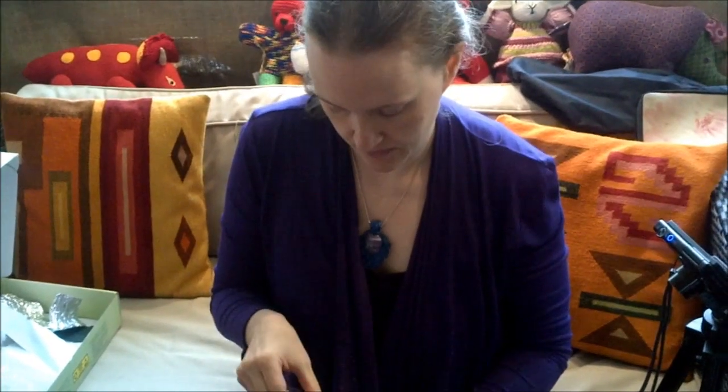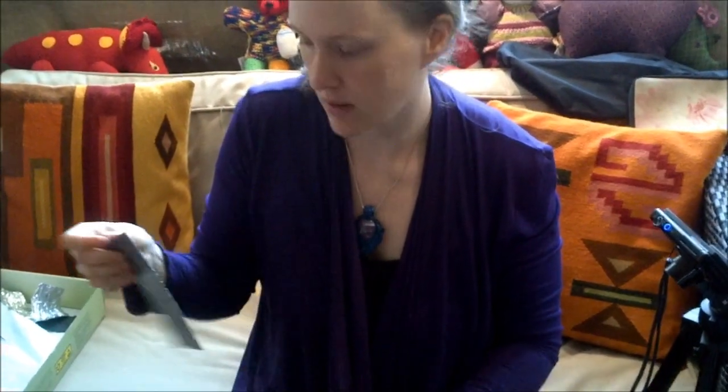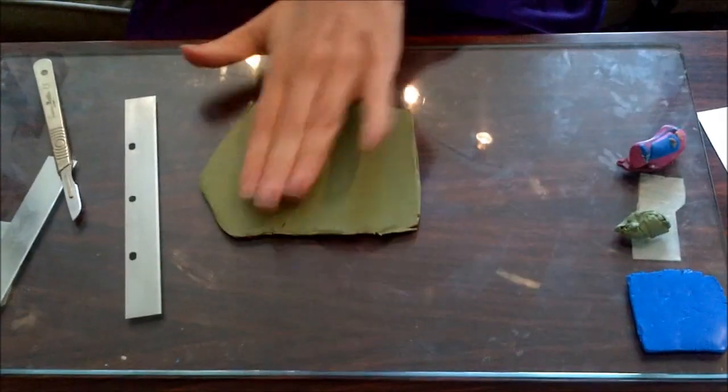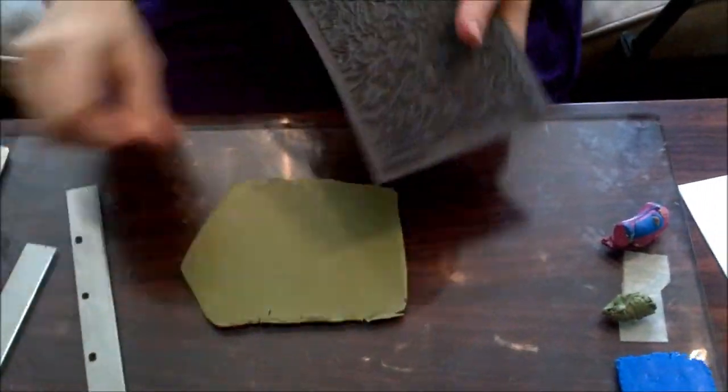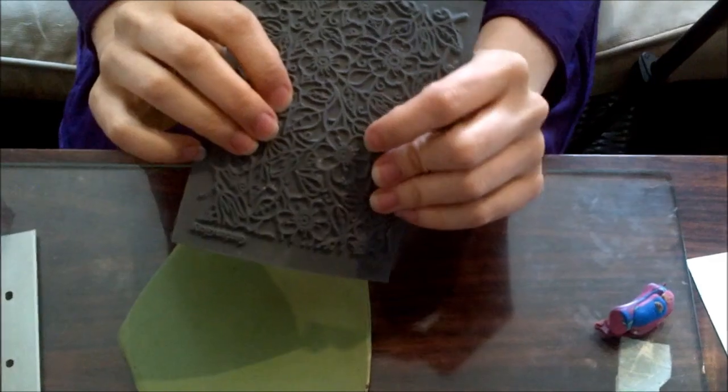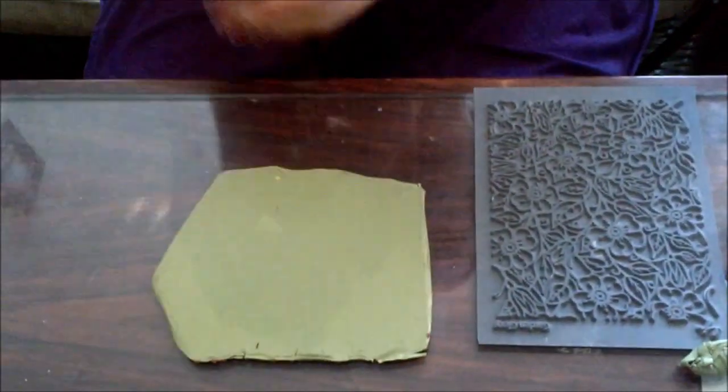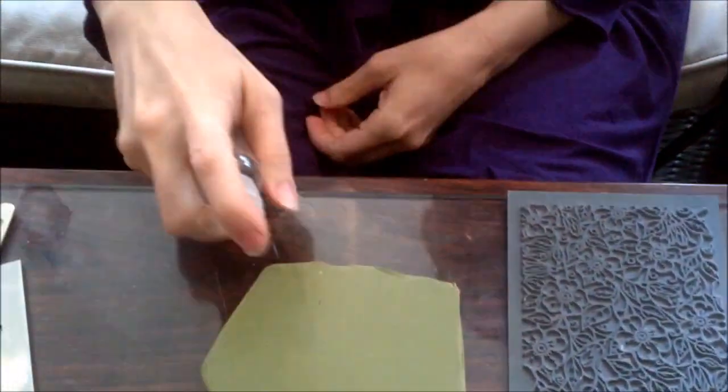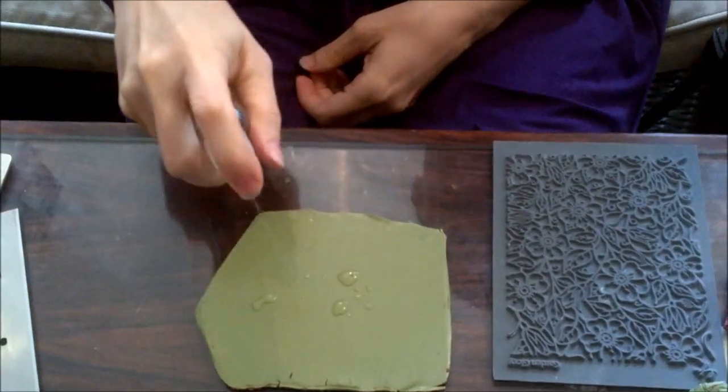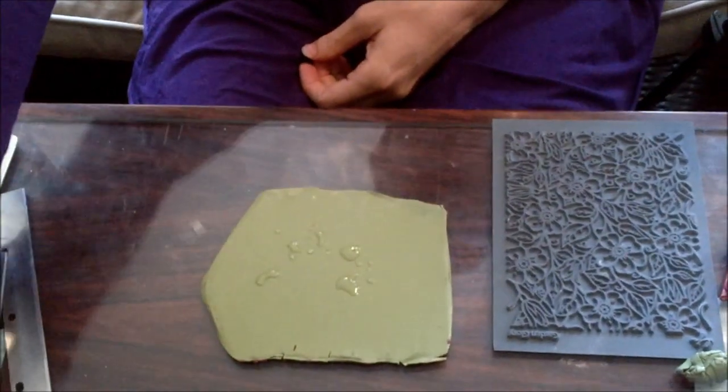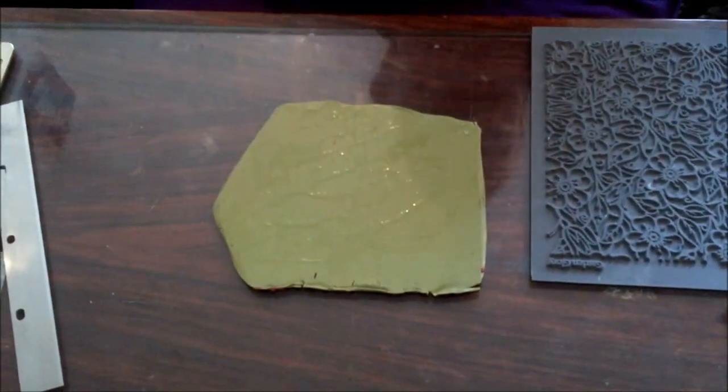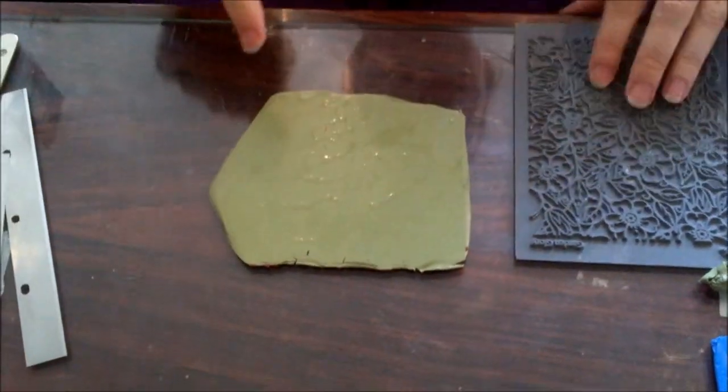So you get a stamp. This is going to determine the pattern you get. This is a nice deep stamp. So what you want to do before you stamp it is you spritz it with some water. This is supposed to be a fine mist. It doesn't work very, very fine. So there's a bit of water. That just stops the stamp sticking to the clay.